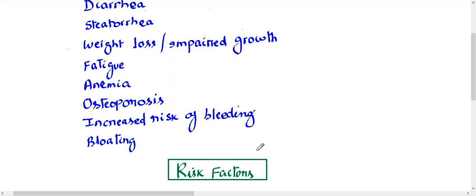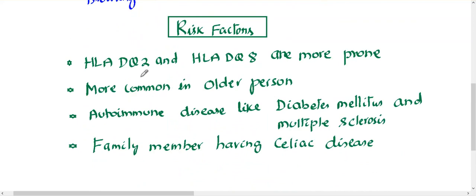Regarding risk factors: HLA-DQ2 and DQ8 variants are prone to celiac disease, and it is mostly seen in older populations. Since it is an autoimmune disease, having one autoimmune disease makes you prone to another. So people with autoimmune diseases like diabetes mellitus, multiple sclerosis, and Hashimoto's thyroiditis are prone to celiac disease. Having family members with celiac disease is also an important risk factor.